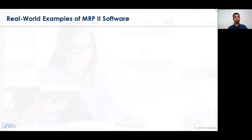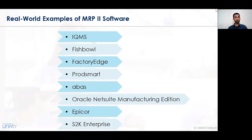Let us look at real-world examples of MRP2 software available in the market today. These include IQMS, Fishbowl, Factory Edge, ProdSmart, Abass, Oracle NetSuite Manufacturing Edition, Epicor, and S2K Enterprise. Organizations can implement any of these software solutions to function their activities in a very effective way.